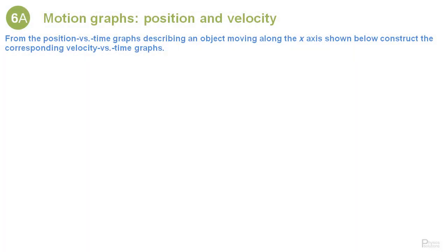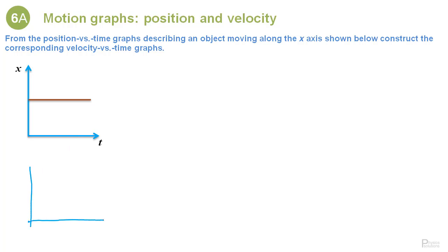From the position versus time graphs describing an object moving along the x-axis shown below, construct the corresponding velocity versus time graphs. In all these graphs we have the time on the horizontal axis and the position on the vertical axis. The line there represents the motion we're trying to describe. The idea is from this plot, finding out how the corresponding velocity versus time plot looks like. I'm going to draw here the axes corresponding to my velocity versus time graph: t and v.